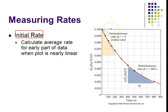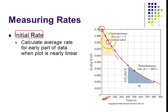For an initial rate, it's still a slope calculation, but it's for the very early part of the graph where it's really linear. For the first 100 seconds or so, that's a nice straight line. You can see the dotted line here is the linear line. The data is very much in agreement with that for the first 100 seconds. So my average rate for that first 100 seconds I would call my initial rate.